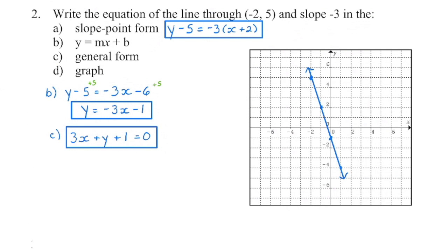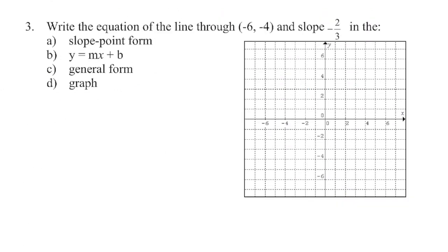To put this in general form, my x is negative so I need to move everything to the other side. x comes over switching the sign; y stays on the left of the equal sign. Move the negative 1 over making it positive 1, set it equal to zero. Make sure you included the arrowheads on your line. Here's the final line using all three forms.